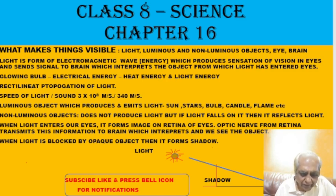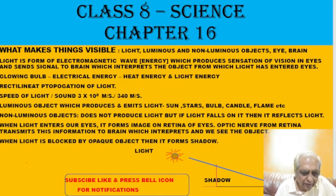When you go out in hot sun, your head becomes warm because light rays are falling on your head. We keep various things for drying in hot sun because light is energy — it evaporates the water. An important property of light is called rectilinear propagation of light, which means that light travels in straight lines.